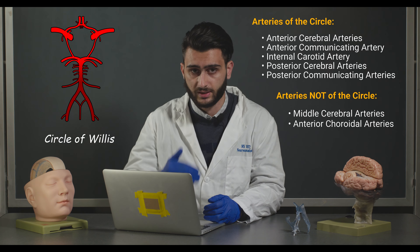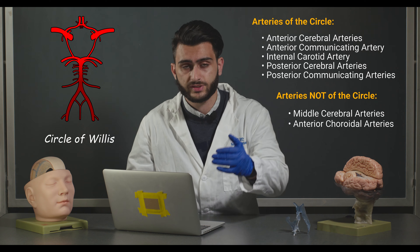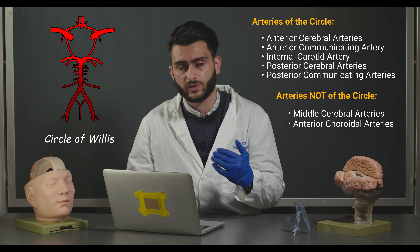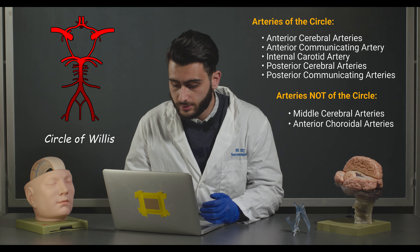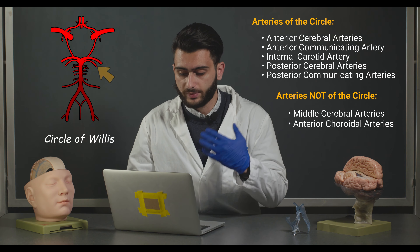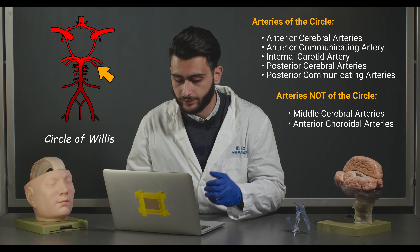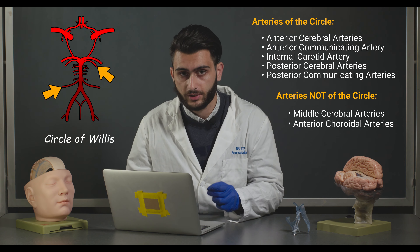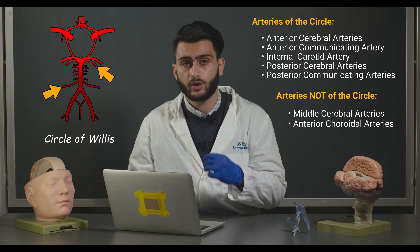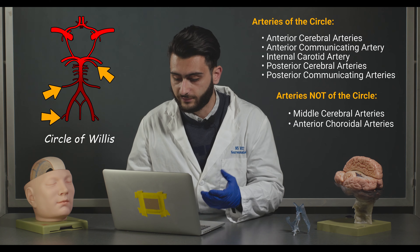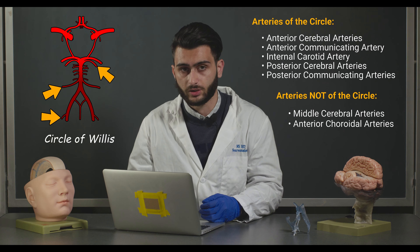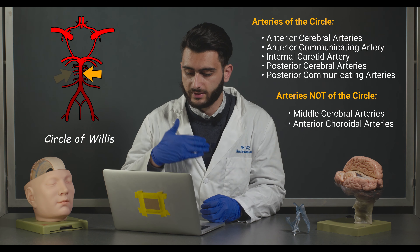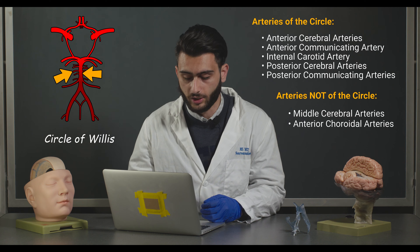Next are more of the cerebellar arteries — those feeding the cerebellum as well as much of the brainstem. We have the superior cerebellar artery, the anterior inferior cerebellar artery, the posterior inferior cerebellar artery, as well as the basilar artery and the pontine arteries.